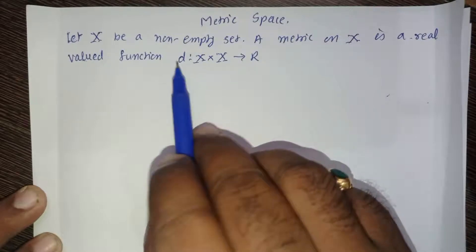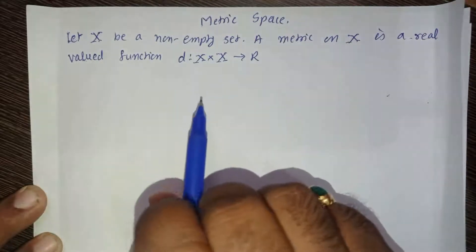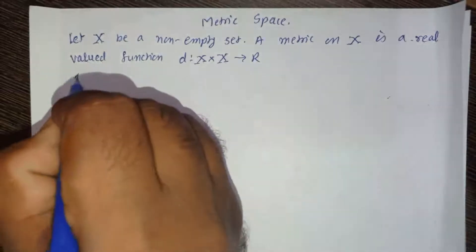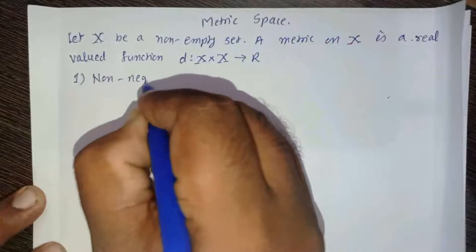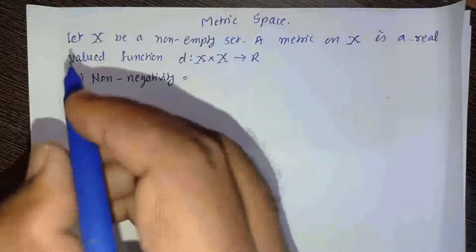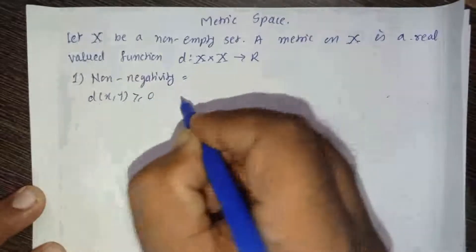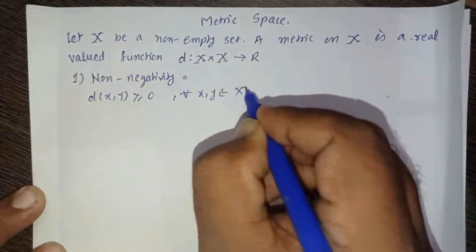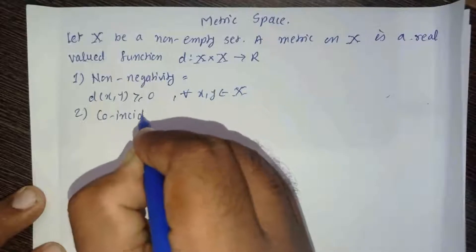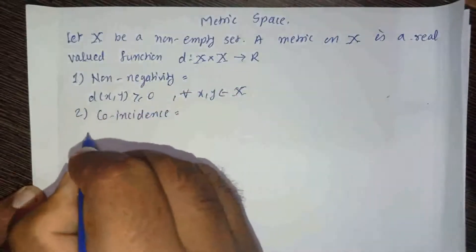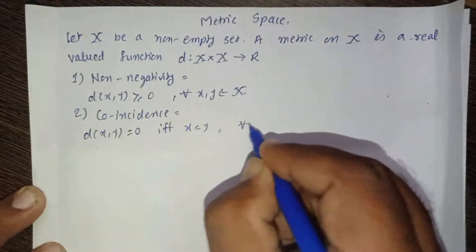If D satisfies those conditions, it is called the metric on X, and the set X together with the metric D is called a metric space. The four conditions are: first, non-negativity — D of XY is greater than or equal to 0 for all X, Y belonging to X. Second, coincidence — D of XY is equal to 0 if and only if X equals Y.